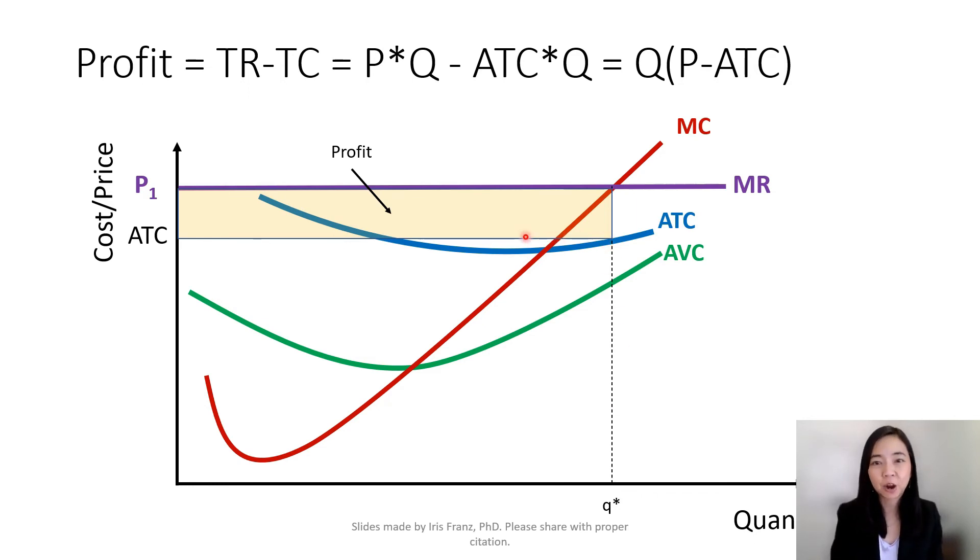And therefore, we can find our average total cost is here. That's the reason why our profit is equal to our quantity Q star times the difference between our price P1 and average total cost.